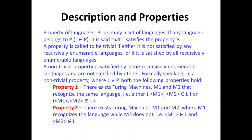A property P of a language is simply a set of languages. A language L is said to satisfy property P if L belongs to P. A property is trivial if P is empty, or if no recursively enumerable language satisfies P, or if all recursively enumerable languages satisfy P. For a non-trivial property: there exist Turing machines M1 and M2 recognizing the same language where M1 belongs to L_P but M2 does not, or M1 recognizes the language while M2 does not, so M1 belongs to L_P and M2 does not.